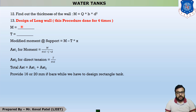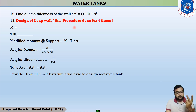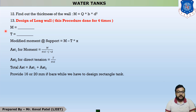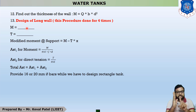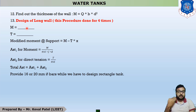Step 13 is the design of the long wall. This procedure is done four times — twice for the long wall (at support and at span) and twice for the short wall (at support and at span).